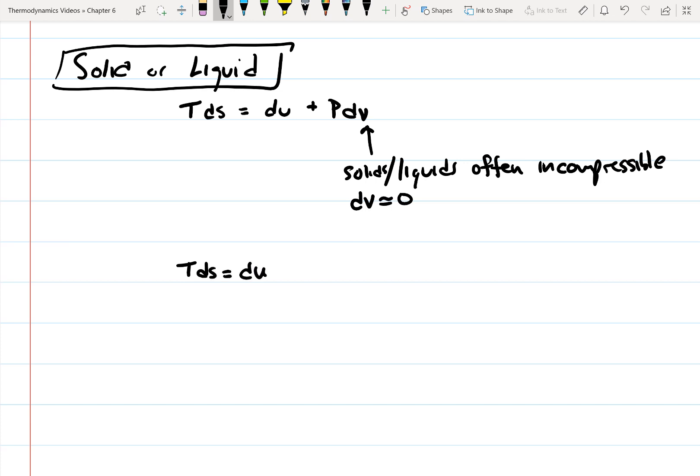And then we already know that DU is equal to CdT. So C is the specific heat. And so what we can do is solve this for dS, because dS is really what we're looking for, the change in entropy.